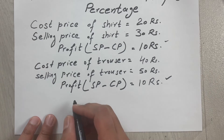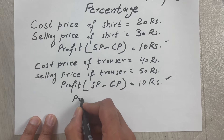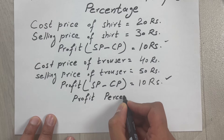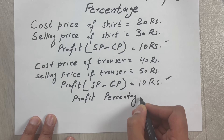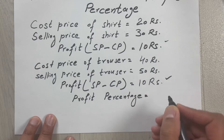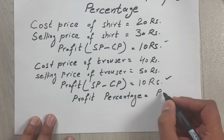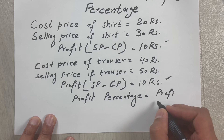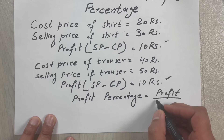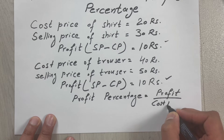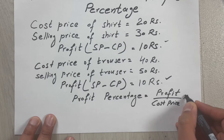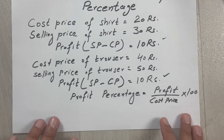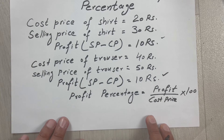So now the profit percentage formula comes into play. Profit percentage equals profit divided by cost price, multiplied by 100 — because we have to calculate the percentage. So this is the formula to calculate the profit percentage.